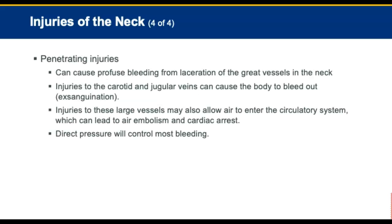Penetrating trauma to the neck can cause profuse bleeding from lacerations of the great vessels. Injuries to the carotid arteries and jugular veins can cause the body to bleed out rapidly. If a vein has been punctured, an air embolism may result. The esophagus and the spinal cord can also be damaged by a penetrating injury. Direct pressure over the bleeding site will control most neck bleeding. Follow the steps in skill drill 28-3, assess for signs of shock, apply immediate spinal motion restriction if indicated, and apply high flow oxygen.